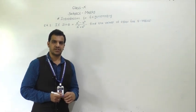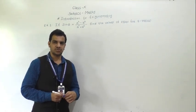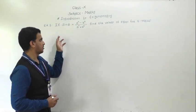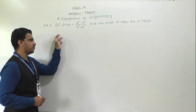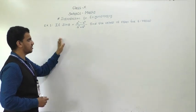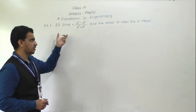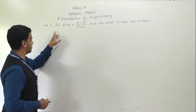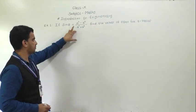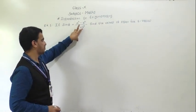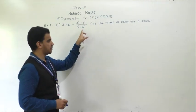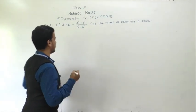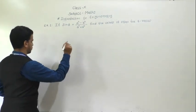Hello students. Today we are going to solve more examples on the basis of trigonometric ratios and the relationship between trigonometric ratios. The first example is: if sin θ equals (a² - b²) / (a² + b²), find the values of the other five trigonometric ratios.